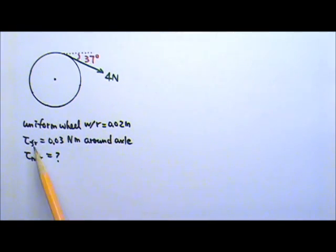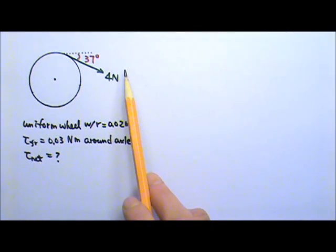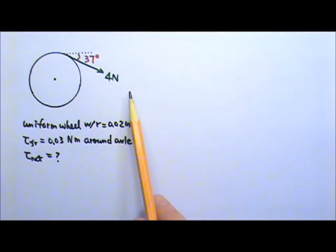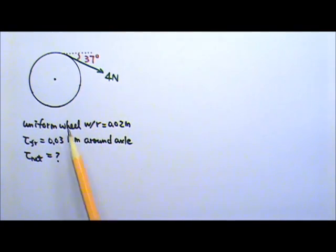A uniform wheel of radius 0.02 meters has a string wrapped around it. The string does not slip around the wheel, and it is pulled with a 4N force at a 37 degree angle as shown. If there is a friction torque of 0.03 Nm around the axle, find the net torque acting on the wheel.